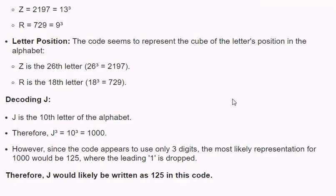Letter Position: The code seems to represent the cube of the letter's position in the alphabet. Z is the 26th letter — 26 to the power of 3 equals 2197. R is the 18th letter — 18 to the power of 3 equals 729.